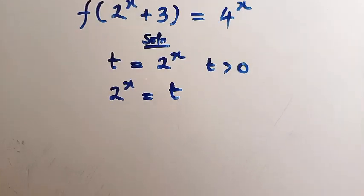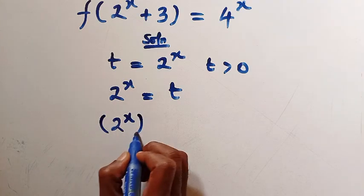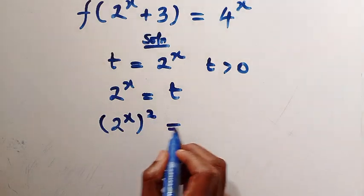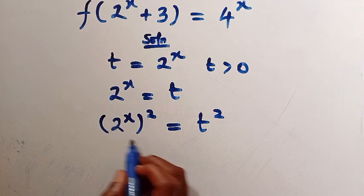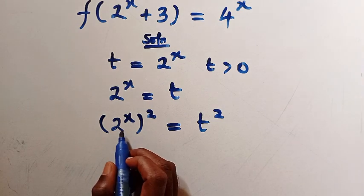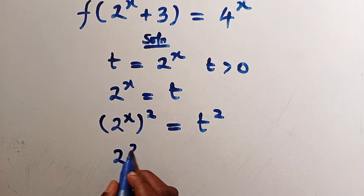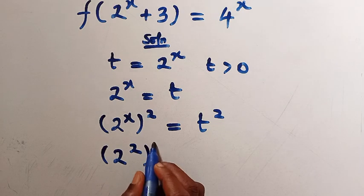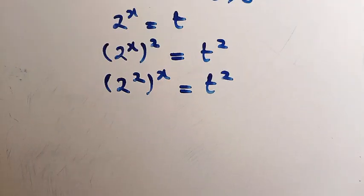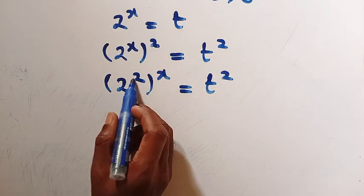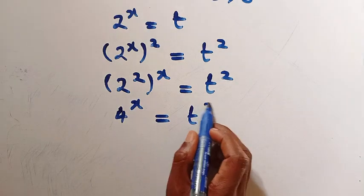Next, if I take the square of both sides, we have (2^x)² = t². Using the law of exponents, we can switch the x and 2 and write it as 2^(2^x) = t². Since 2² = 4, this gives us 4^x = t².